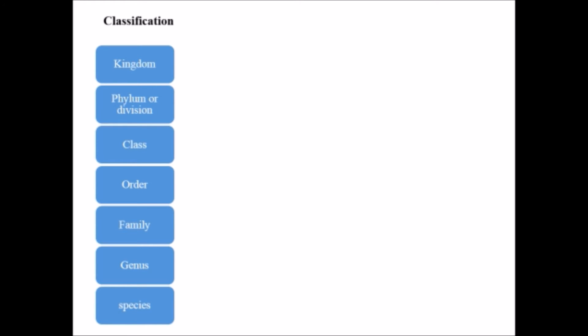Now, how we classify organisms. We classify organisms as kingdom, phylum or division - division in case of plants - class, order, family, genus, and species.